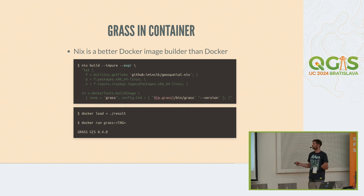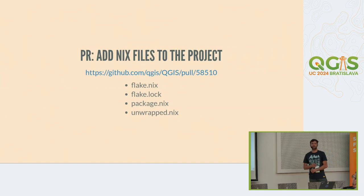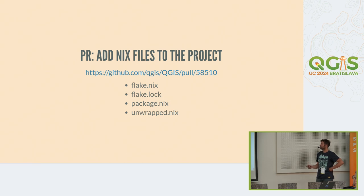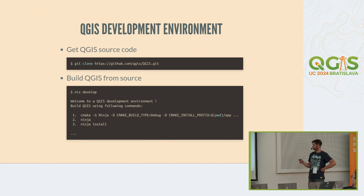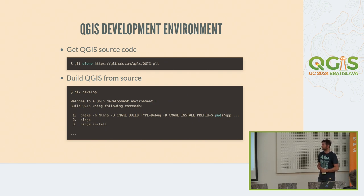For developers, Nix can provide another very interesting feature. I created a PR in the QGIS GitHub repository containing four files — normally it's three files but QGIS packaging is a little more complicated. In this PR you will find those four files, and if you accept them as the QGIS project, what you could do as a developer is clone the source code and run the command Nix develop, which will automatically drop you into a shell environment with all QGIS build dependencies and everything else needed to build QGIS. It gives you nice instructions and you can just copy-paste them and start building QGIS without worrying about where to get dependencies X, Y, or Z.